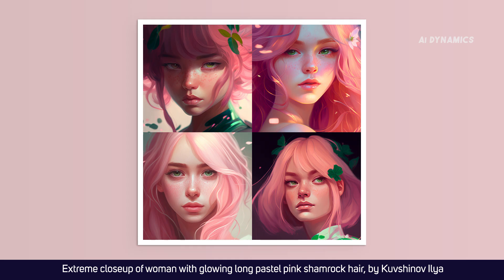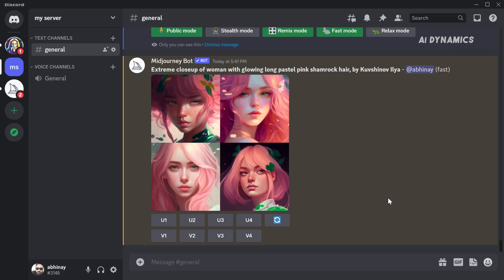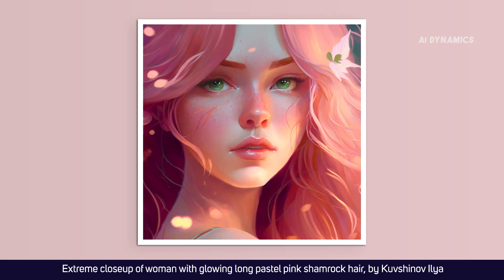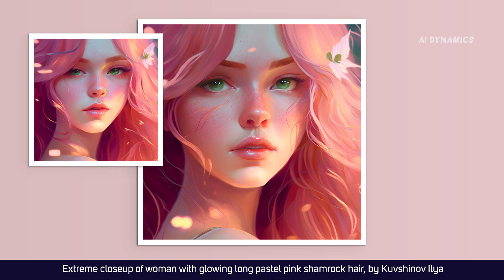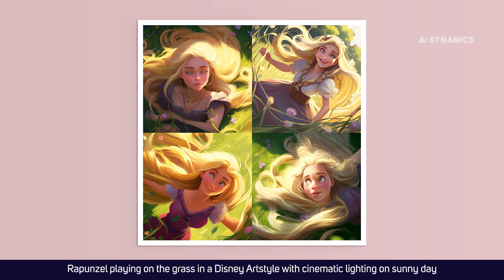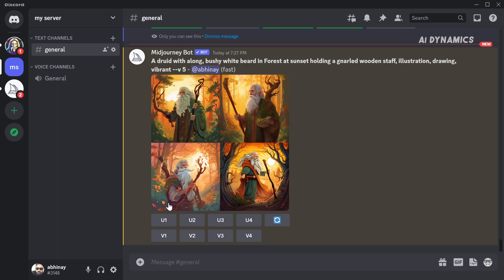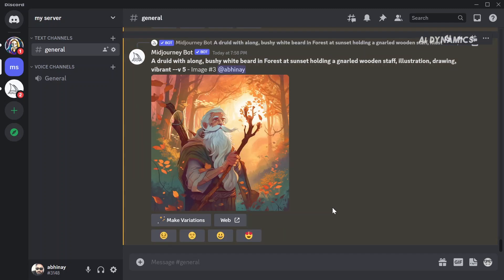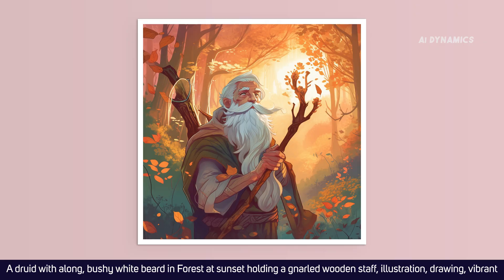In earlier versions, the generated images were 512 pixels in size. To produce a high resolution image of 1024 pixels, you had to upscale it. However, the upscaled versions were never identical to the initial image. But now, Midjourney produces high resolution 1024-pixel images by default. The trade-off is that the behavior of the U — that is, the upscale button — has changed. Clicking on it separates the selected image from the initial image grid but will not further upscale an image.